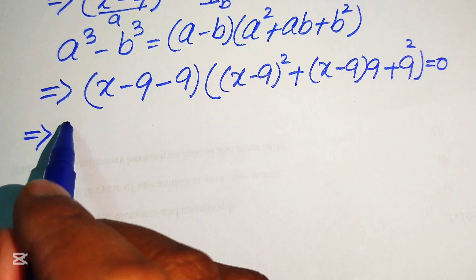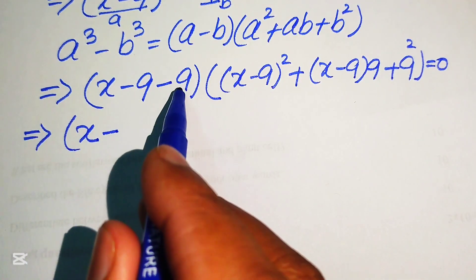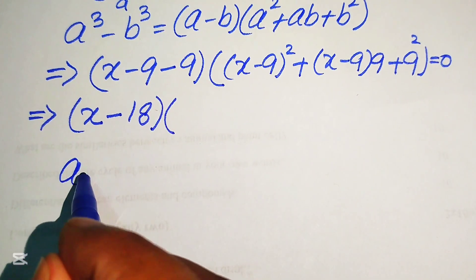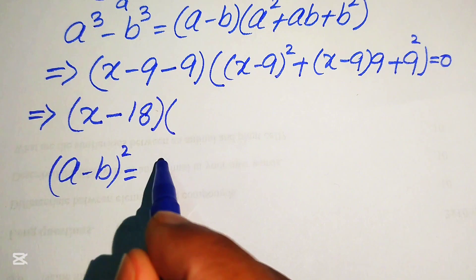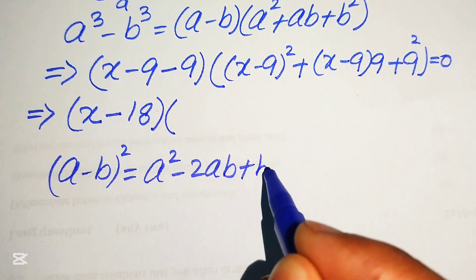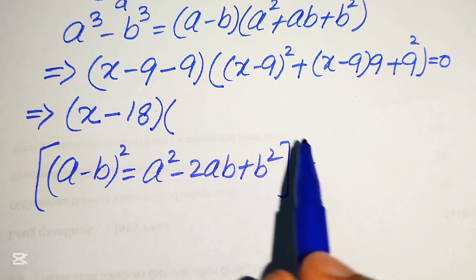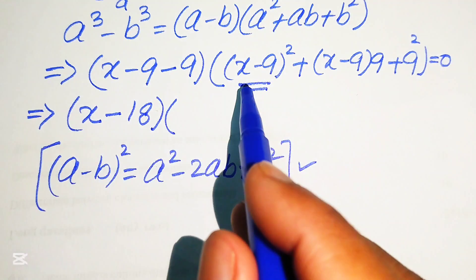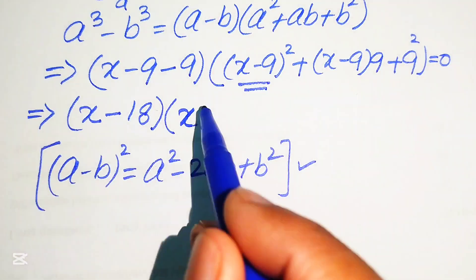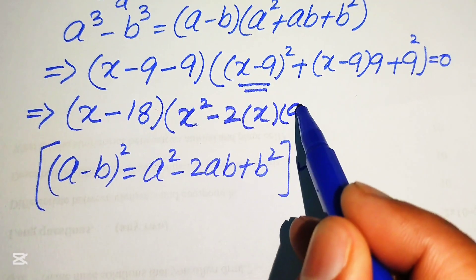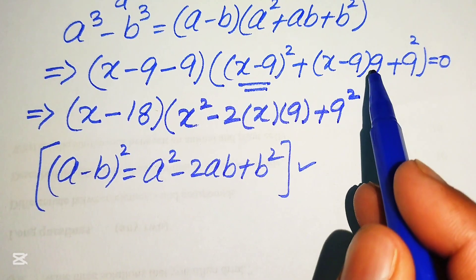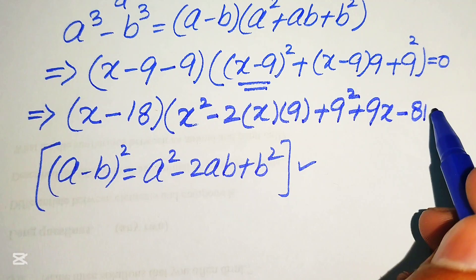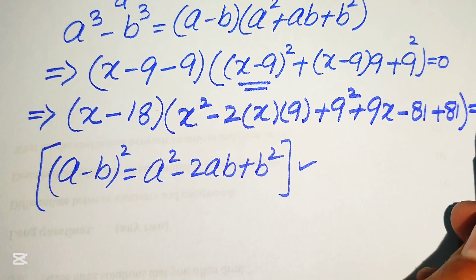Simplifying the first factor: x - 9 - 9 = x - 18. For the squared term, we apply the identity (a - b)² = a² - 2ab + b², giving (x - 9)² = x² - 18x + 81. The middle term (x - 9)(9) expands to 9x - 81, and b² = 9² = 81.